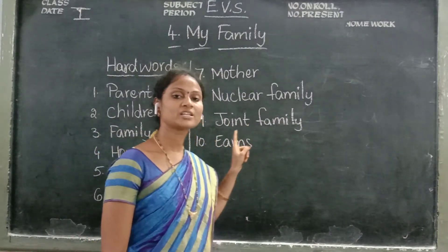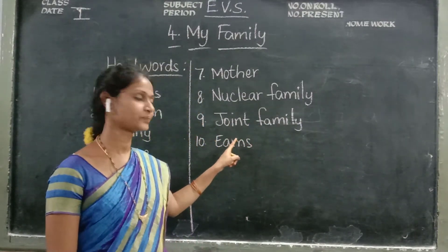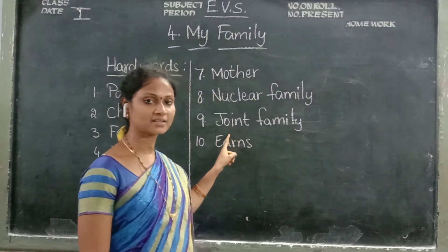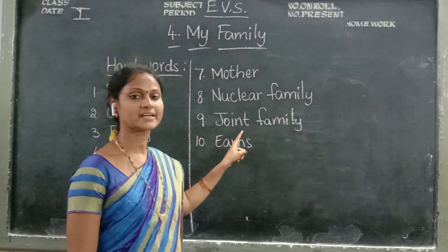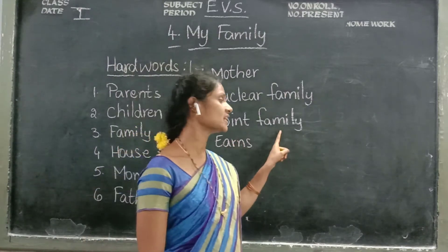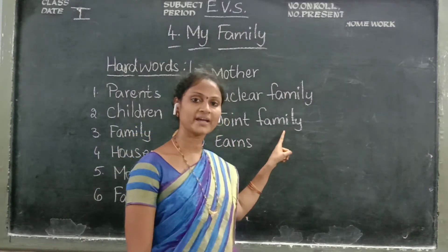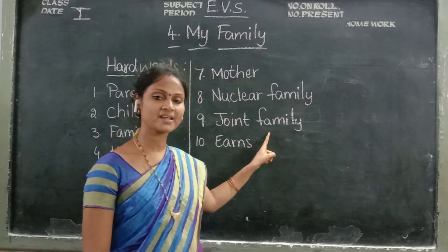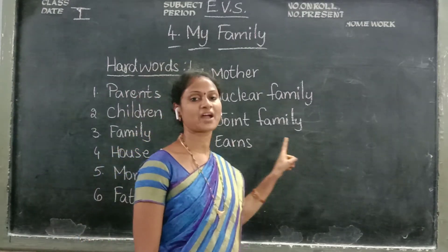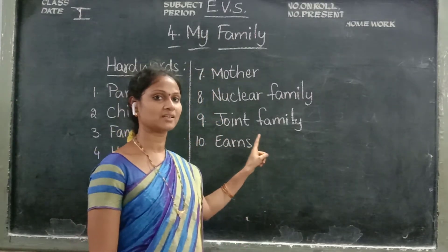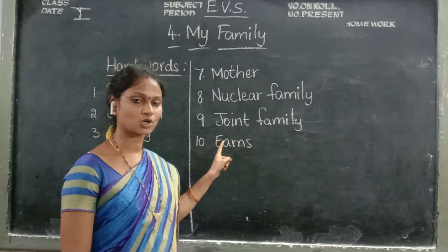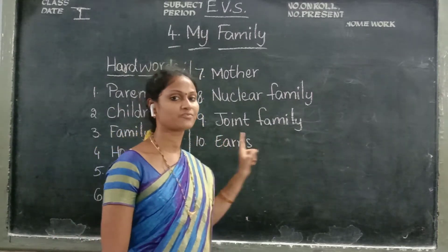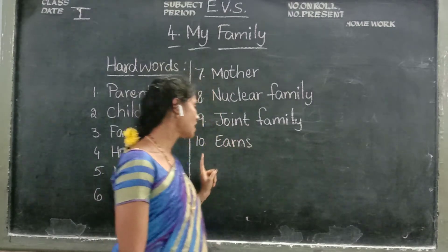Now the ninth one: joint family. What is the spelling of joint family? J-O-I-N-T. Joint. Family: F-A-M-I-L-Y. Family. Joint family.